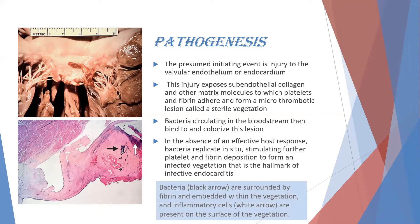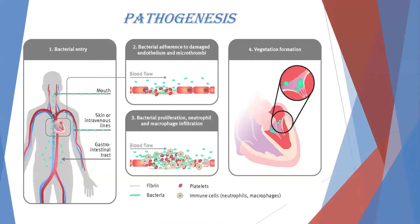In the histological image, bacteria shown in black are surrounded by fibrin within the vegetation, with numerous inflammatory cells indicated by white arrows. To summarize pathogenesis: endothelial dysfunction predisposes to microthrombosis, followed by bacterial proliferation, neutrophil and macrophage infiltration, and formation of vegetation.